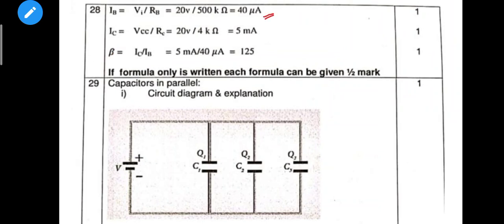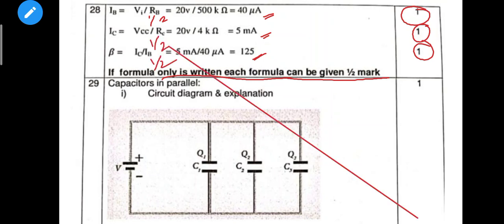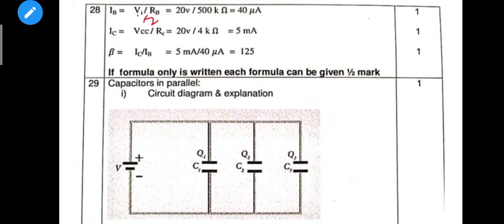Next numerical: i_b. Formula, substitution, answer with unit. You can use beta for 1 mark. Each formula can be given half a mark, and the answer is also half a mark. If you have the answer, 1 and a half marks total.